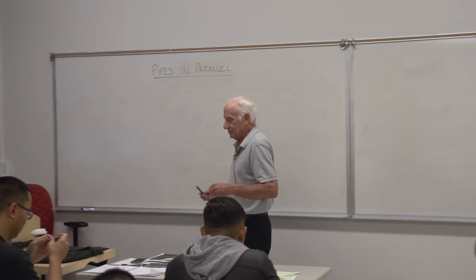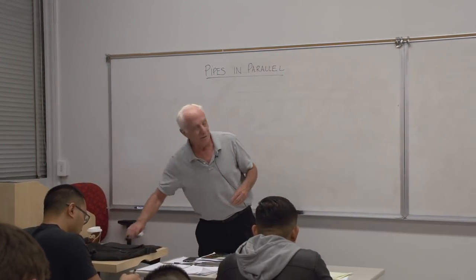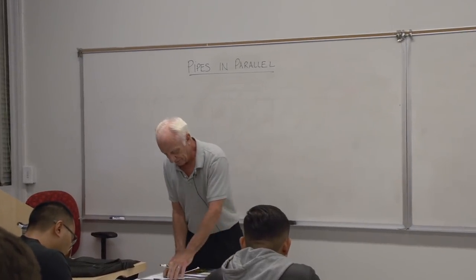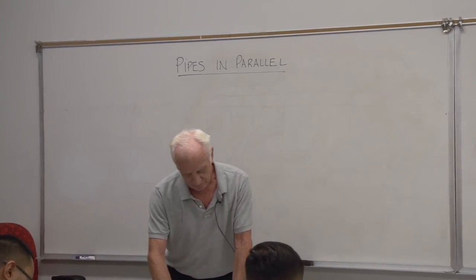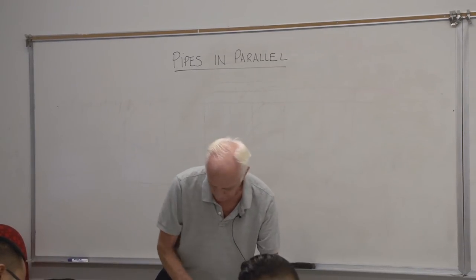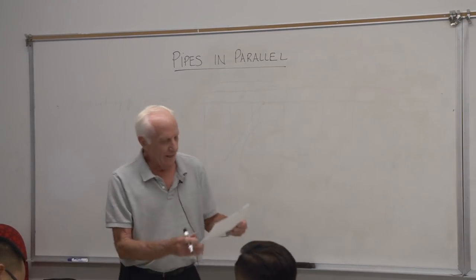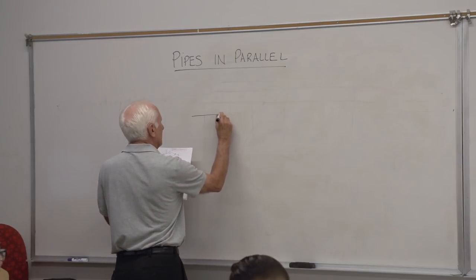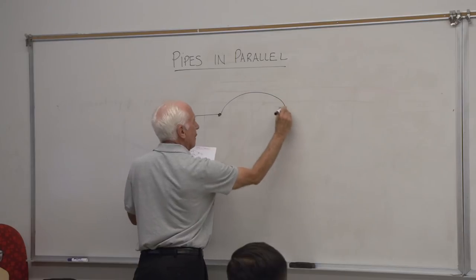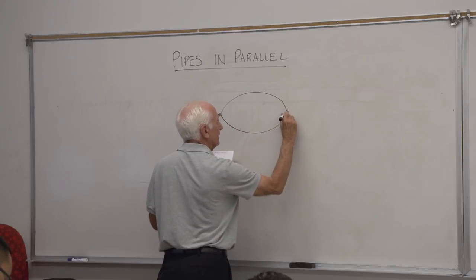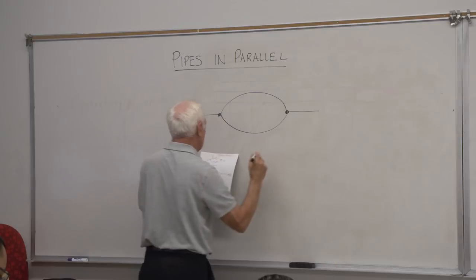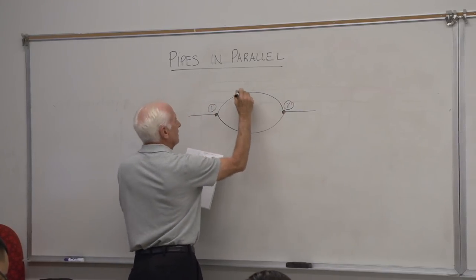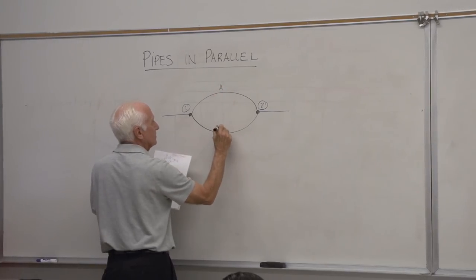Our next topic is going to be pipes in parallel. Similar to what we did in pipes in series, we're going to draw a couple of sketches. The first is a simple one where a pipe coming in branches — this is our pipes in parallel. We'll call this point one, point two, this is pipe A, and this is pipe B.